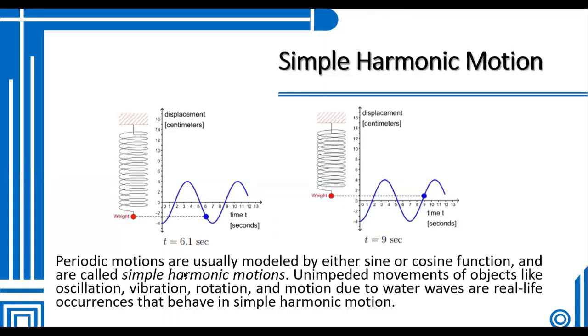Periodic motions are usually modeled by either sine or cosine functions and are called simple harmonic motions. Impeded movements of objects like oscillations, vibration, rotation, and motion due to water waves are real-life occurrences that behave in simple harmonic motion.